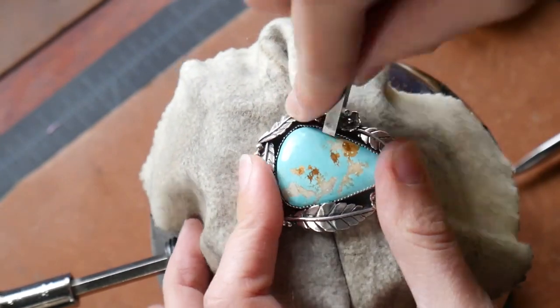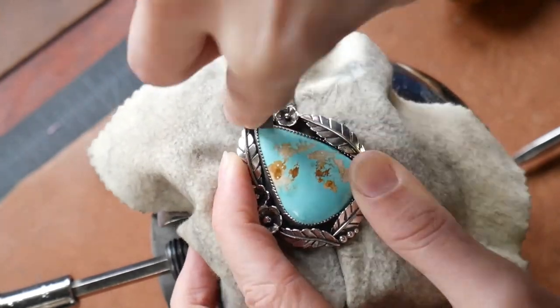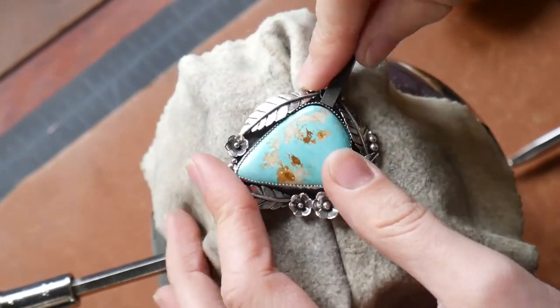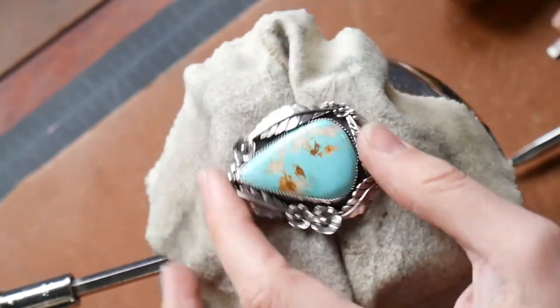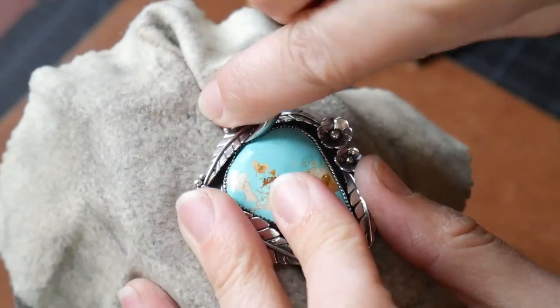Now I have gotten asked quite a few times in the comments section of my previous videos whether I use any sort of glue or adhesive when setting my stone. And the answer is, I do not. I make my bezel very snug and tight, so that way when I go to set my stone, there's absolutely no wiggle room at all for my stone.